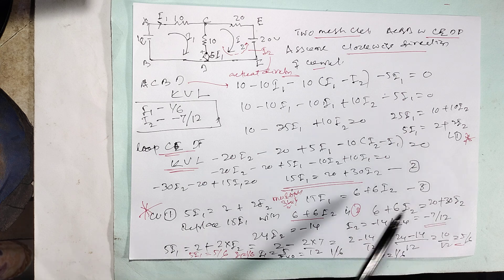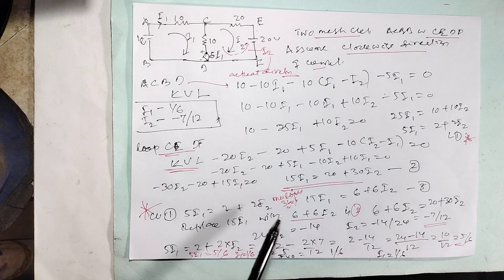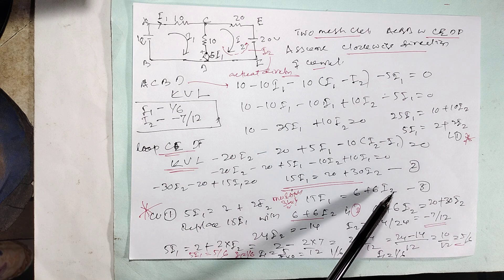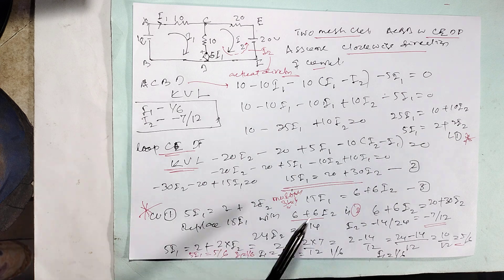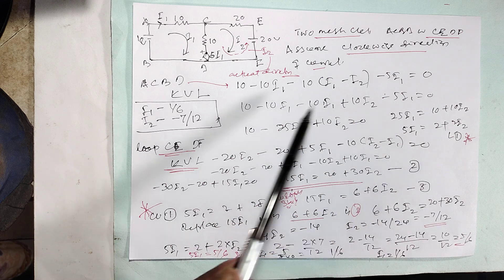So we multiply here by 3. What is it coming? 15I1 equals 6 plus 6I2. We multiply these by 3. Then 15I1, this is 15I1 is here.